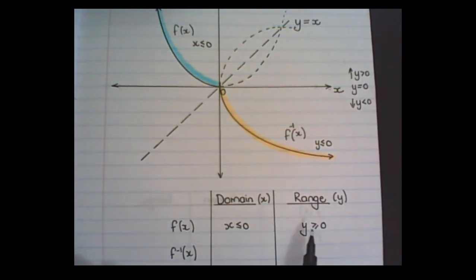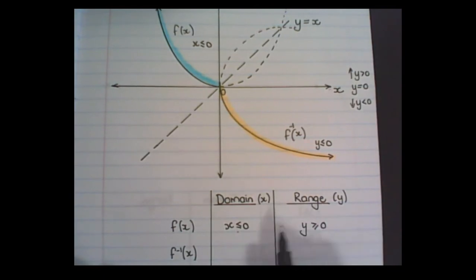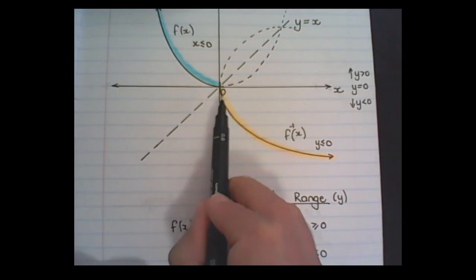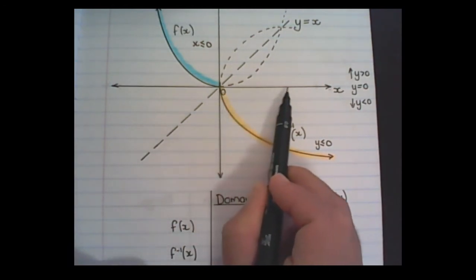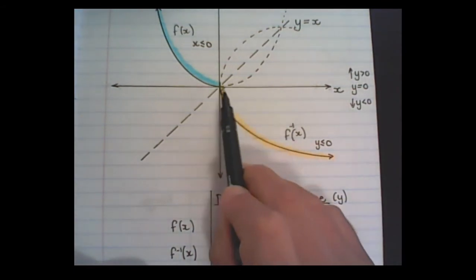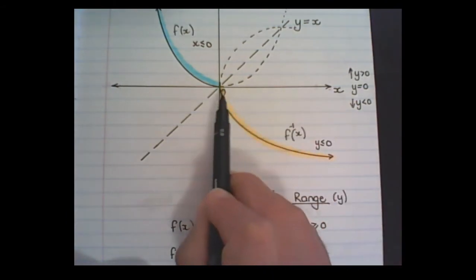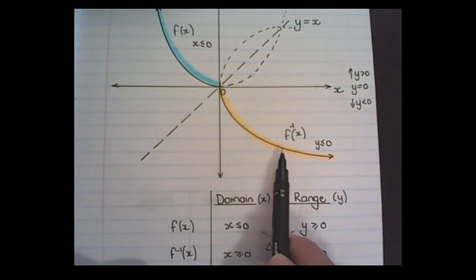Using this information, I can write down the information for the inverse function. Since x and y swap positions, x would be bigger or equal to 0 and y would be smaller or equal to 0. You can see that the properties are swapped. You can also read this from the graph: all values of x in this graph are on the right side of the y-axis, meaning x is bigger or equal to 0, and all values of y are below the x-axis, so y is smaller or equal to 0.